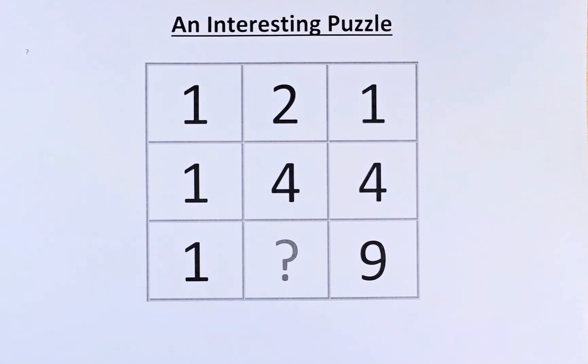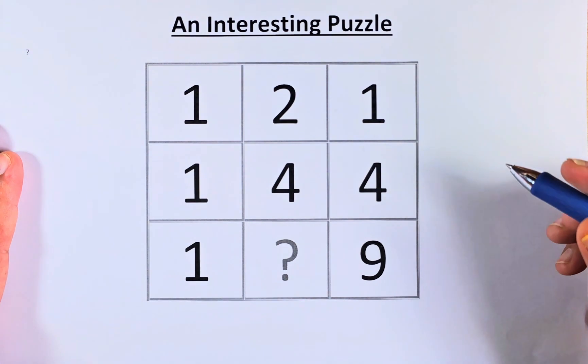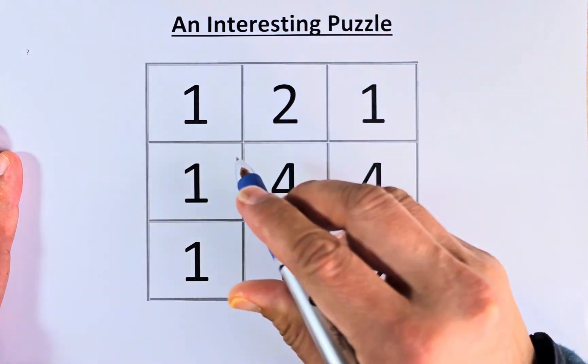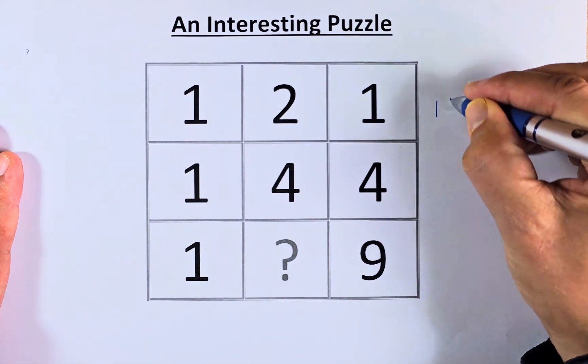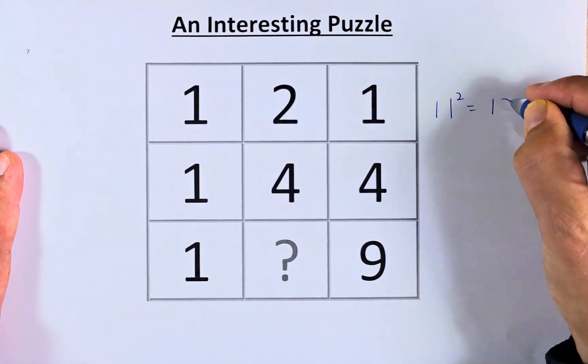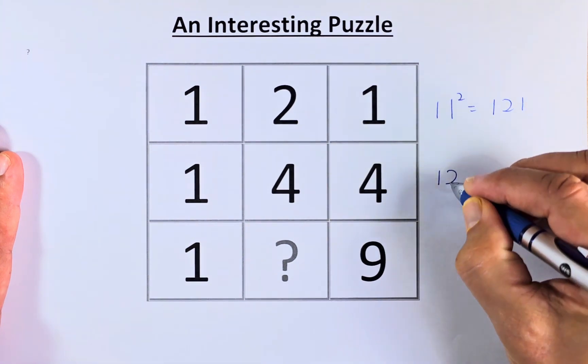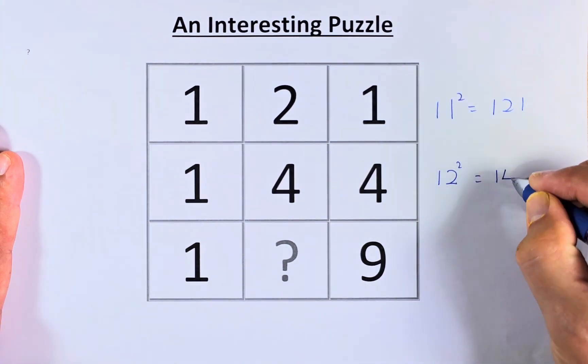In fact, it is a straightforward answer because we are just going to straight away answer the question. So 1, 2, 1 is actually 11 squared. It gives you 121. 1, 4, 4 is actually 12 squared, which is 144.